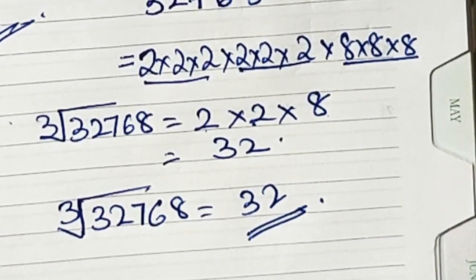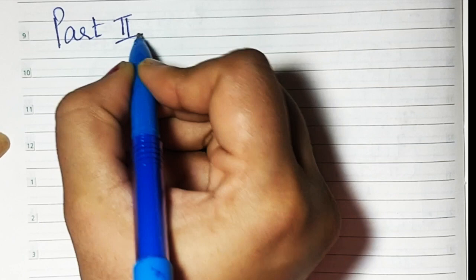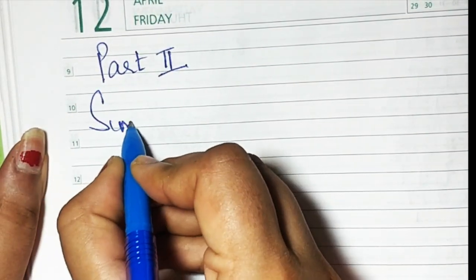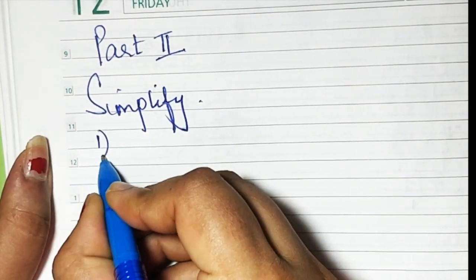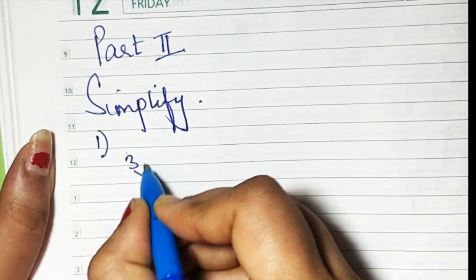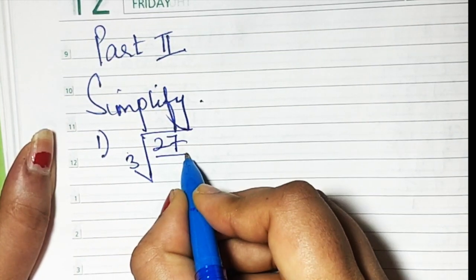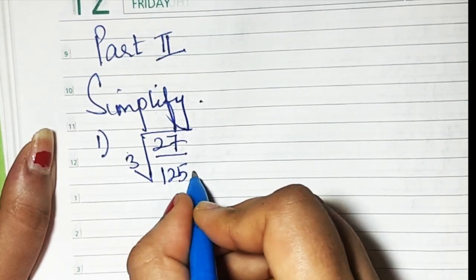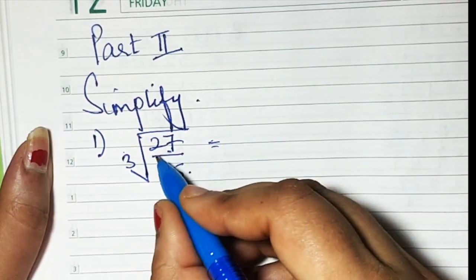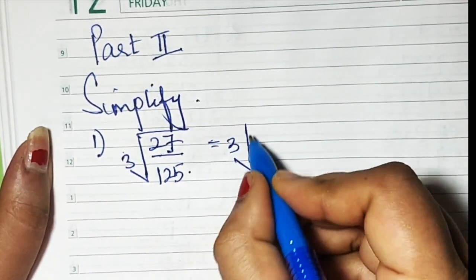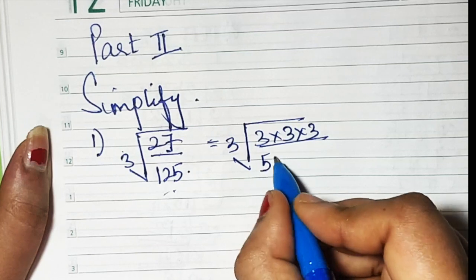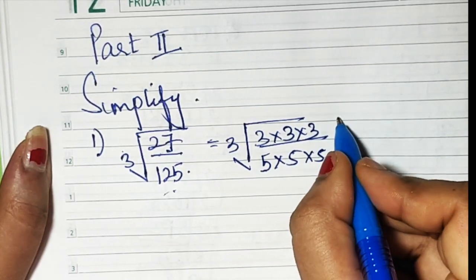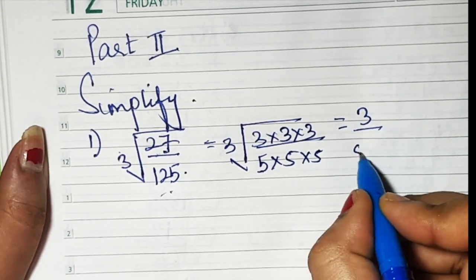Now let's see part 2 of this exercise — simplify. The first sum says: find the cube root of 27 upon 125. Basically, the cube root of 27 is 3 (since 3 × 3 × 3) and cube root of 125 is 5 (since 5 × 5 × 5), so your answer is going to be 3 upon 5.